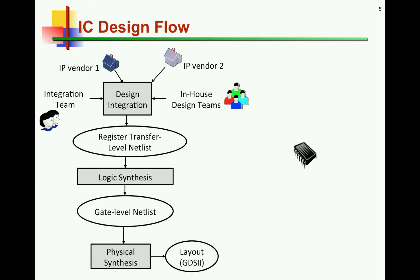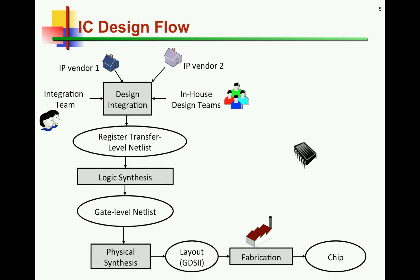The gate level netlist then goes through another step called physical synthesis, where we talk about transistors placed on the final layout of the design. Everything up to this point is the design represented in soft electronic form — electronic files, nothing concrete yet. Once the design layout is ready, it is sent out for fabrication to a foundry, and that's when things become concrete and chips start to be produced.